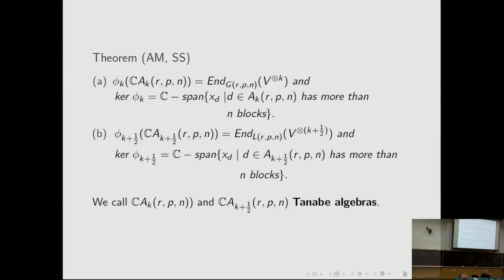This theorem gives Schur-Weyl duality between the Tanabe algebra CA_{K,r,p,N} (named so because most of the definition is already in Tanabe's work) and the action of the complex reflection group G(r,p,N) on V^{⊗k}. The kernel is spanned by X_D where D has more than N blocks. Part B gives Schur-Weyl duality between CA_{K+1/2,r,p,N} and L(r,p,N) acting on V^{⊗(K+1/2)}, where V^{⊗(K+1/2)} means V^{⊗k} embedded inside V^{⊗(K+1)}.